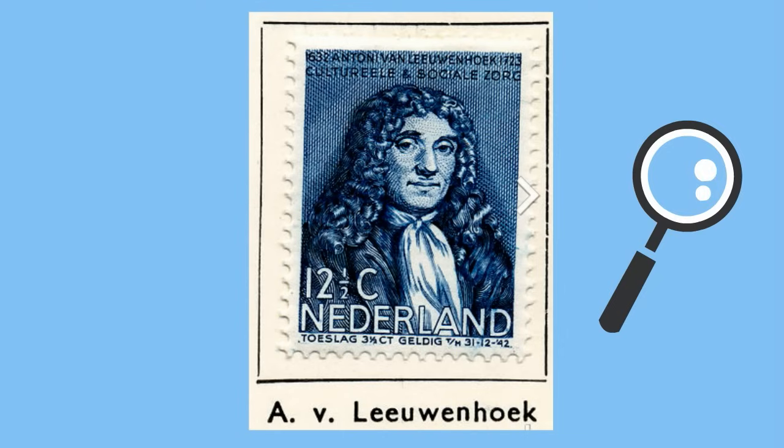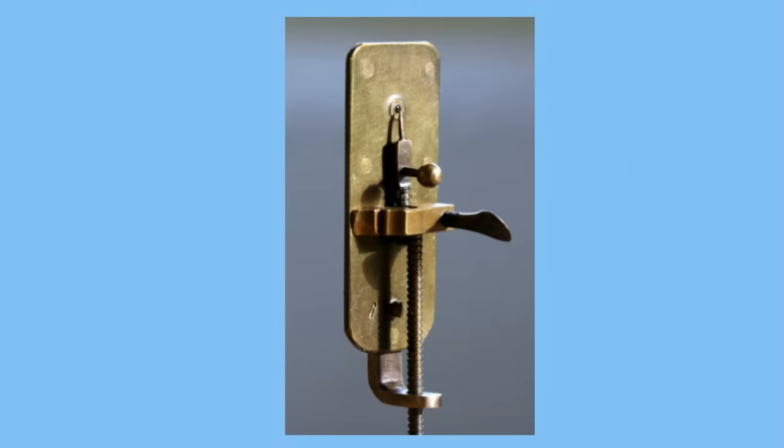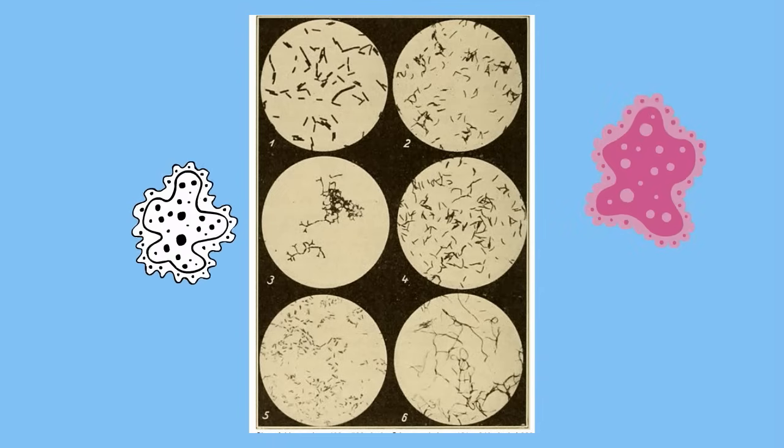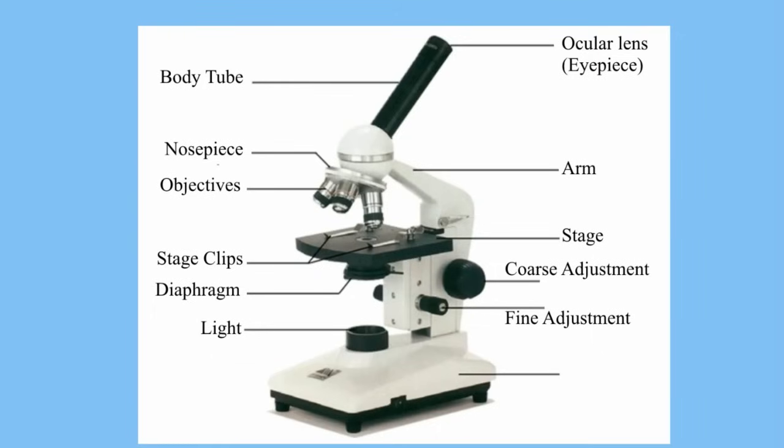In the 1670s Anton von Leeuwenhoek was a lens grinding and polishing person. He was considered the best person around. These lenses led to him building a microscope which was considered the first practical microscope. In 1674 Anton von Leeuwenhoek was the first to see and describe bacteria.